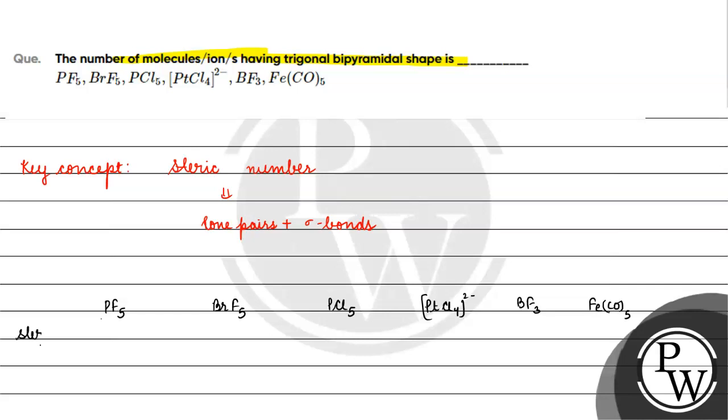If we talk about steric number, phosphorus atom has how many electrons? 5 electrons are 5 fluorine. 5 sigma bonds will be formed. Steric number will be 5, hybridization will be sp3d, and what will happen to us? The shape will be square.